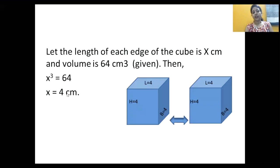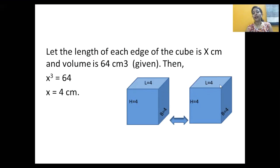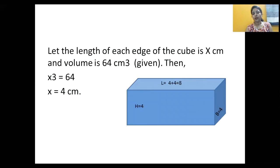So the edge of each cube is 4 cm, meaning l = b = h = 4 cm. When these two cubes are joined end to end, they form a cuboid. As you can see, when the two cubes join, the breadth b and height h remain the same. Only the length changes — so the length l will become doubled and the rest two dimensions remain unchanged.